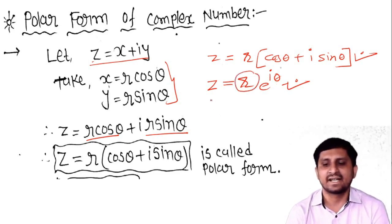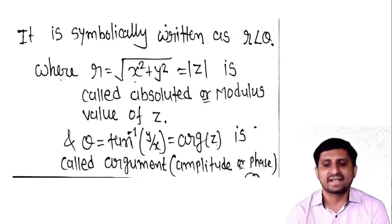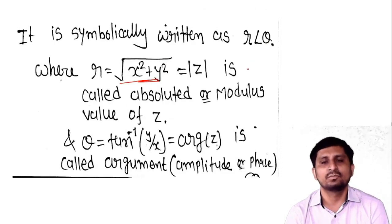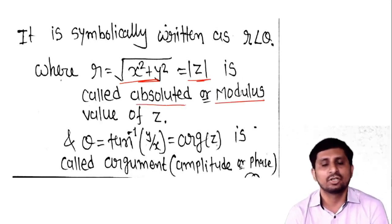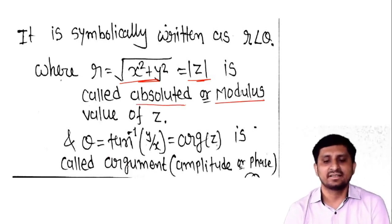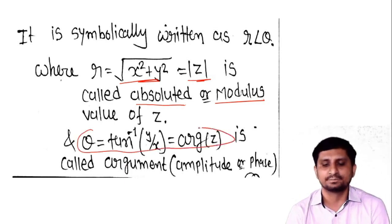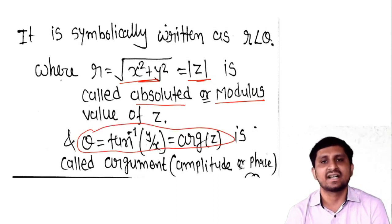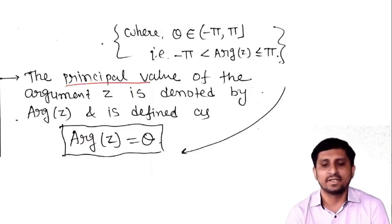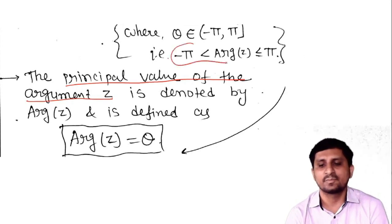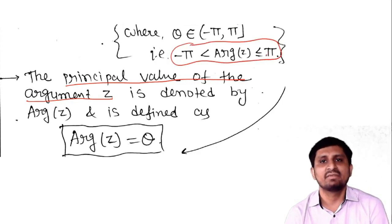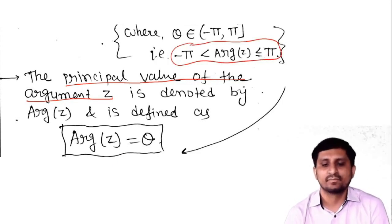We can also write z = re^(iθ), which is called the exponential form. Here r = |z| = √(x² + y²), which is the distance from the origin to the complex number, also called the modulus or absolute value of z. The angle θ = tan⁻¹(y/x) is the argument of z. The principal argument is always between −π and π, denoted Arg(z).